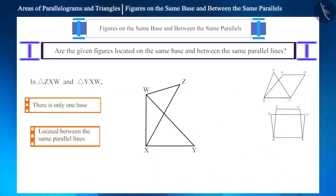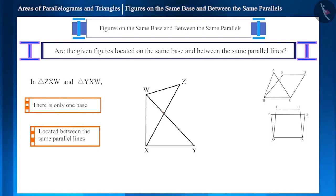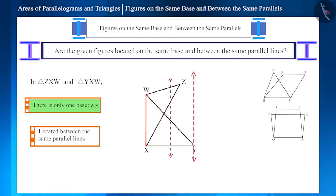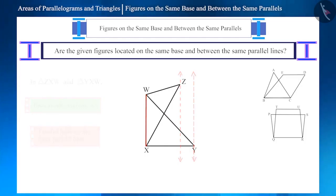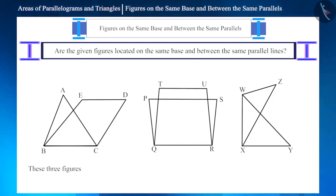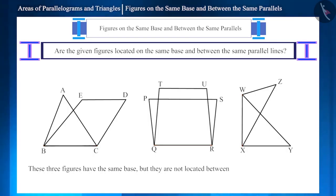For the third figure, side WX is the common side — these two triangles have the same base WX. But these are not located between the same parallel lines. So while these three figures have the same base, they are not located between the same parallel lines.